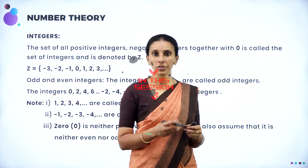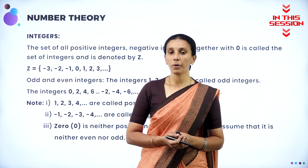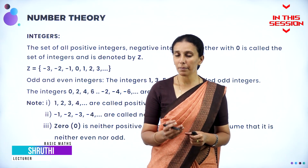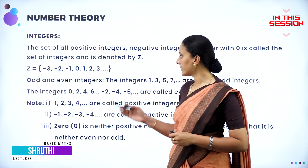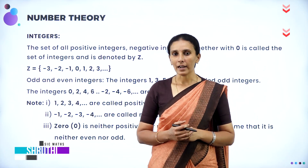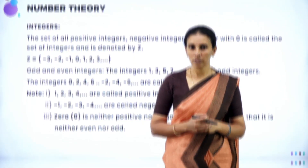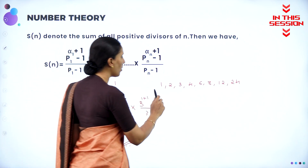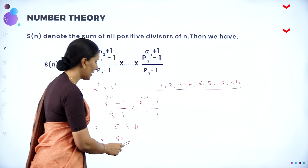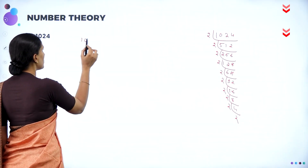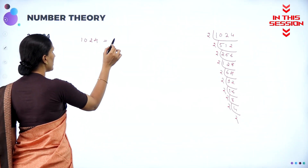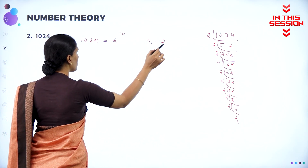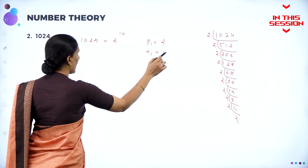Once you define the set of integers, we need to learn about odd and even integers. Any number which is divisible by 2 is called an even number; other than that, it is called an odd number. There are 8 numbers which divide 24, and when you add all these numbers, you will get the value as 60. 1024 can be expressed as 2 to the power of 10, so we have prime as 2 and the power of prime as 10.